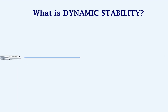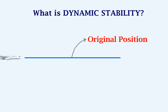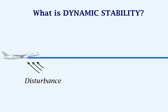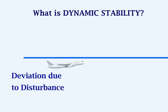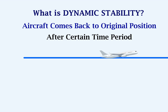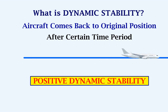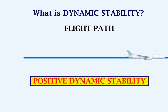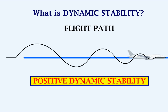This line represents the original position of the aircraft. If there is a disturbance, the aircraft suffers a deviation. If the aircraft comes back to its original position after a certain time period, then it is said to have positive dynamic stability. The flight path of this stability will look like this, with the amplitude of oscillations reducing.